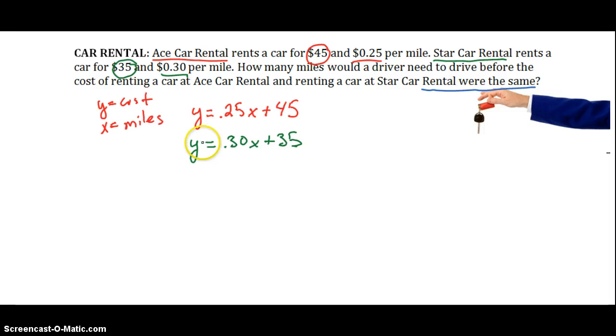And we can use a number of different methods to solve them. But since we've already been solved for y, I think substitution is going to be our best method. Or another way to think of it is if this is how much it costs for Ace Car, and this is how much it costs for Star Car, then if we set those equal, we can find out how many miles it takes until the price is the same. Right? So one way to think about it is like that. Or one way to think about it is y equals this right here. So I'm going to substitute and solve for the number of miles.